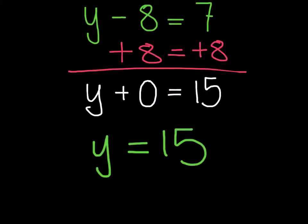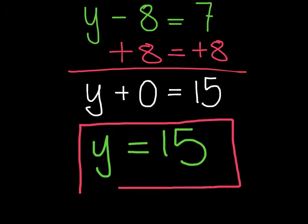My new equation now reads y equals 15. So I successfully used the addition property of equality to isolate my variable y and uncover the value of this unknown.